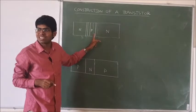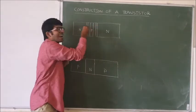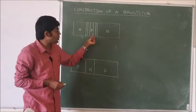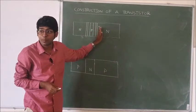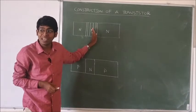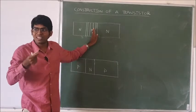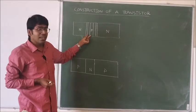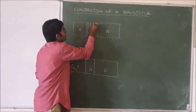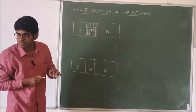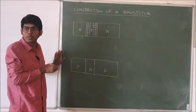At the collector junction, the depletion region is also more towards the base region and less towards the collector region. So we can observe a difference in the depletion region width at the two sides — the depletion region width is always more in the lightly doped region, a point already discussed previously. For convenience, I am drawing some lines here to represent the depletion regions.